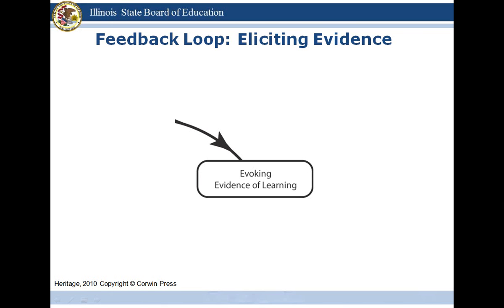The learning goals and success criteria need to be communicated to students in language they can actually understand. During classroom instruction, teachers use a variety of strategies to elicit evidence of how student learning is evolving towards the overall learning goal. There is not a single way to gather evidence from formative instructional practices and questioning. We want to identify when to elicit evidence within the lesson, then determine the type of evidence needed, and select from a menu of formative instructional practice options aligned to the learning goal and appropriate to the purpose and criteria for success.